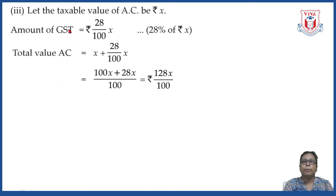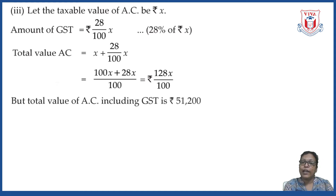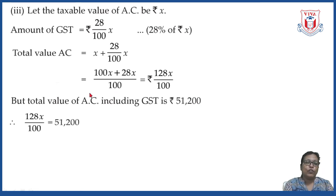The total value is taxable value plus GST, so total value is X plus 28X upon 100. By cross multiplication, this becomes 100X plus 28X upon 100, which equals 128X upon 100. This total value is given as rupees 51,200, so we write 128X upon 100 equals 51,200.